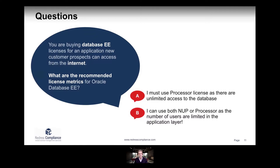Quiz question: You're buying Database Enterprise Edition licenses for an application. New customer prospects can access it from the internet, and your Oracle database software is running in the backend. What is the recommended licensing metric? Is it A — you must use processor licenses as there is unlimited access to the database — or B — you can use both NUP and processor as the number of users is limited in the application layer?